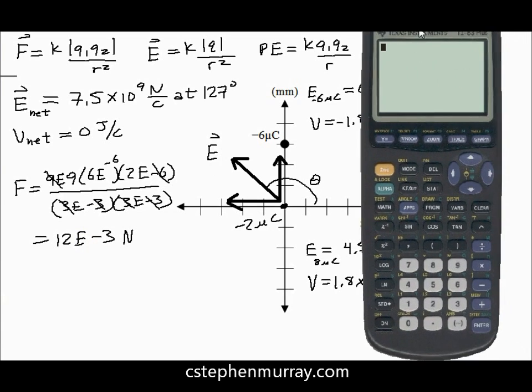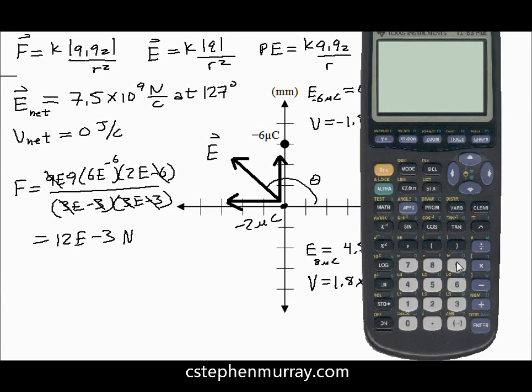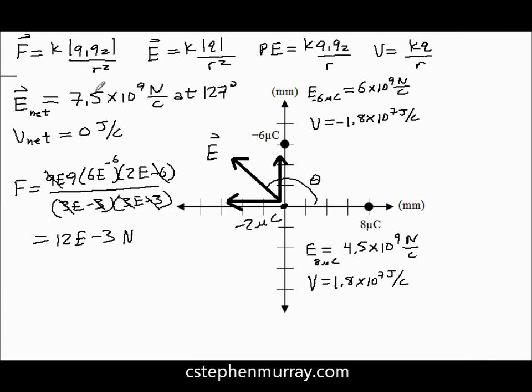Let's bring that in, because there are many times you're not going to do that in your head. So it's 9e to the 9th times 6 times 10 to the minus 6 times 2 times minus 6 divided by 3 times 10 to the minus 3 squared. Exactly what we have. Notice that's supposed to be a positive there.